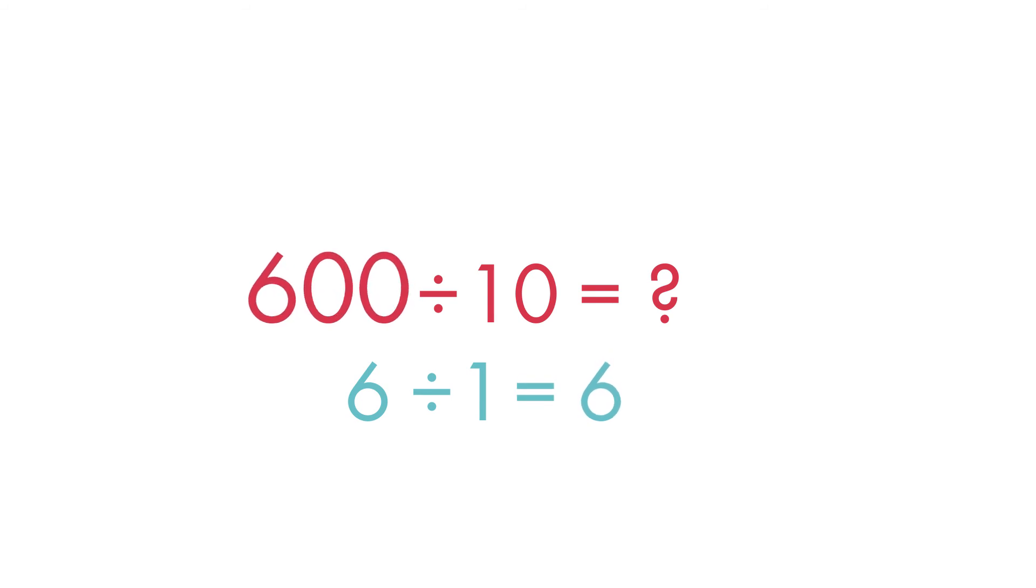So, 600 divided by 1 ten is equal to 6 tens, or 60.